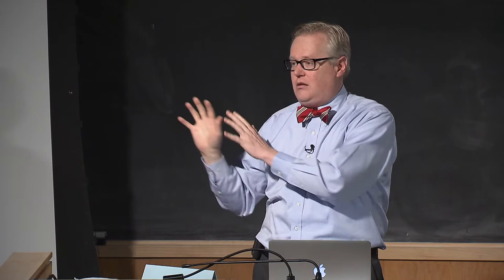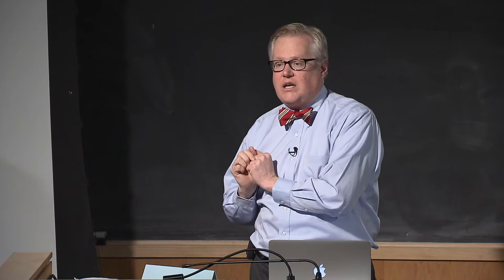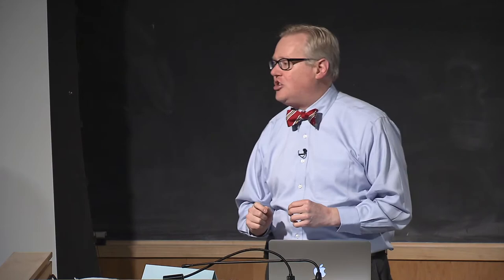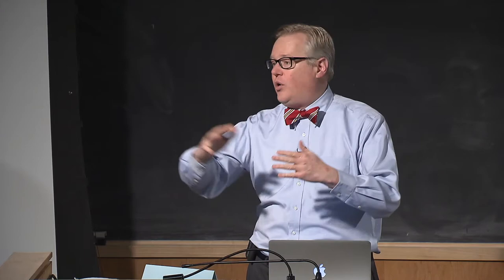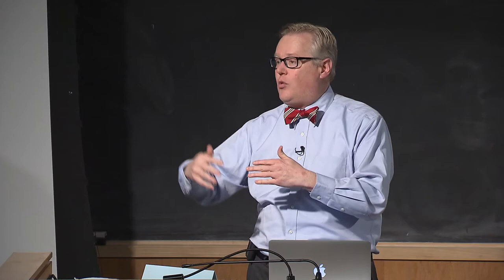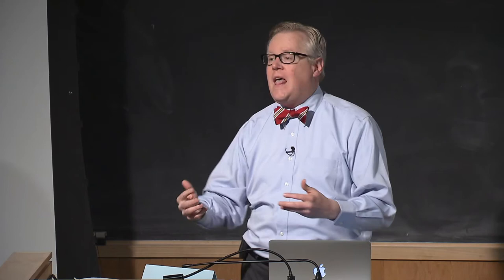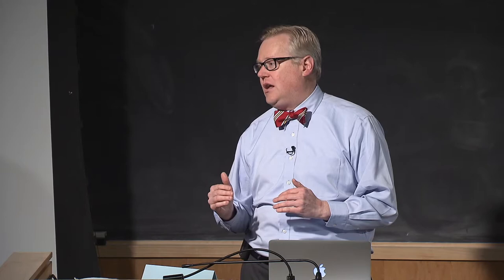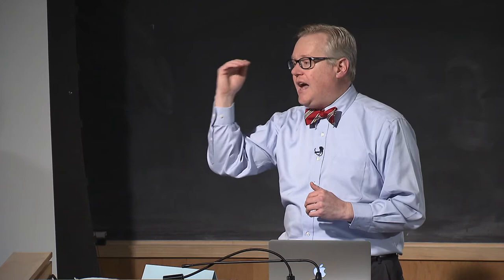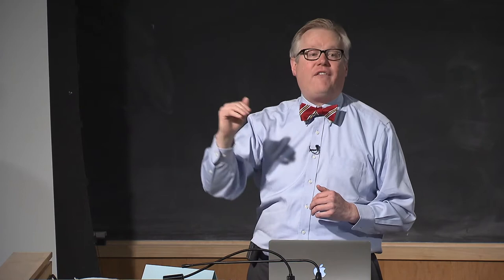If we transplant SCID patients after they develop infections, survival is around 60% and transplants are difficult and prolonged. If we can catch them before infections, survival rates are 95% or higher. That was the rationale for newborn screening. SCID is caused by absence of T cells, due to any of 21 different genetic defects. Wisconsin was the first state to screen; Washington state has been screening since early 2014.